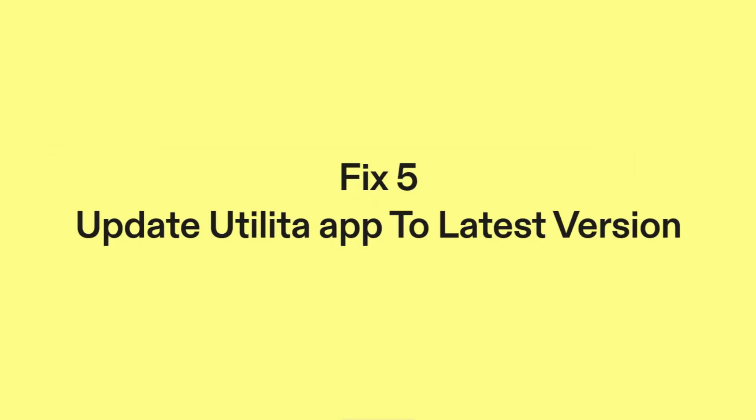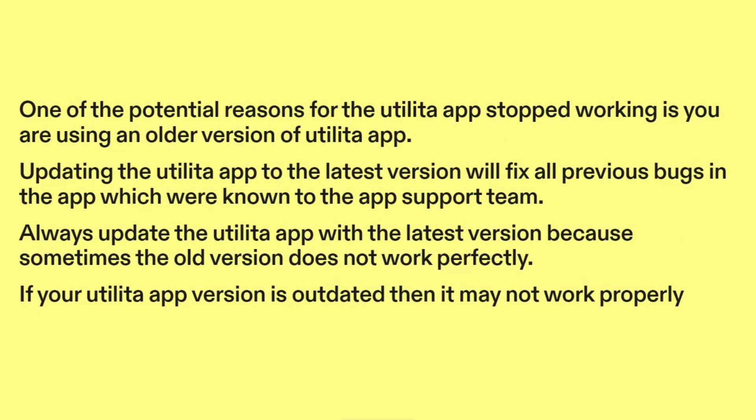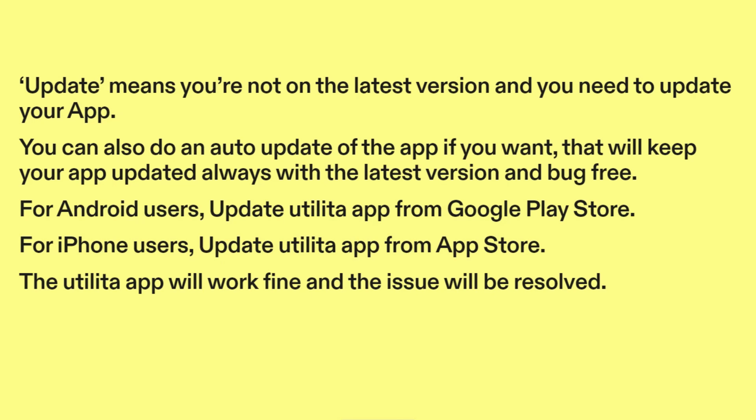Fix five: update the Utilita app to the latest version. One of the potential reasons for the Utilita app stopping work is using an older version. Updating to the latest version will fix all previous known bugs. Always keep the app updated because sometimes the old version does not work perfectly. You can also enable auto-update to keep your app always on the latest version and bug-free. For Android users, update from the Google Play Store. For iPhone users, update from the App Store. The Utilita app will work fine and the issue will be resolved.